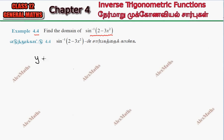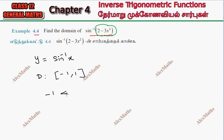When we have y is equal to sin inverse x, the domain gives us the possible x values. The domain of sin inverse x is [-1, 1]. So the entire function must lie between minus 1 and 1. That means: minus 1 is less than or equal to 2 minus 3x squared less than or equal to 1.